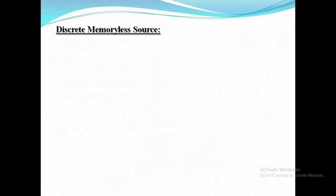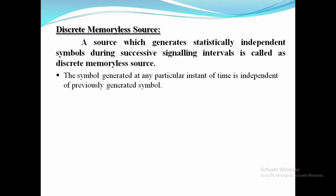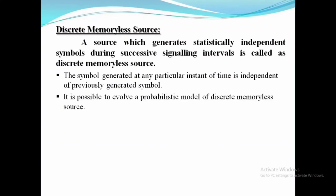A source which generates statistically independent symbols during successive signaling intervals is called a discrete memoryless source. Each symbol is unique and independent of previously generated symbols. It is possible to evolve a probabilistic model of a discrete memoryless source, and source entropy and source information rate can also be defined.